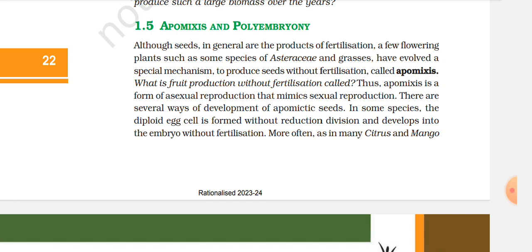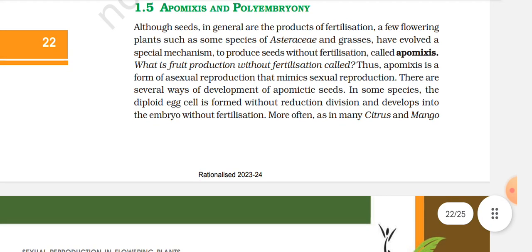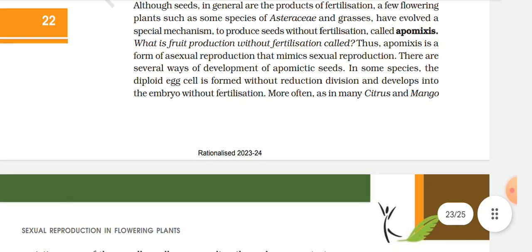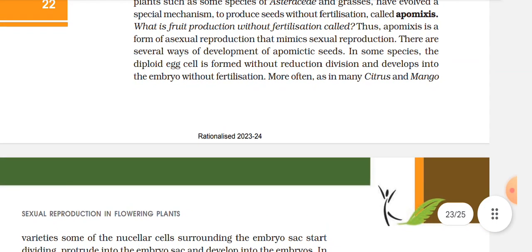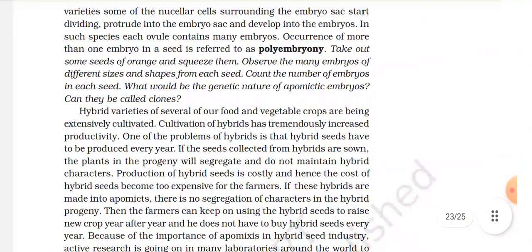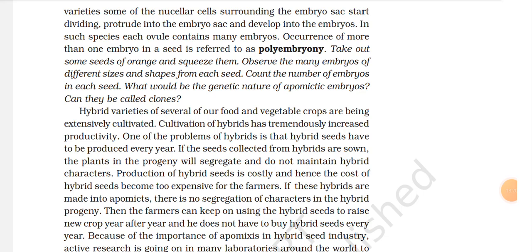Apomixis is a form of asexual reproduction that mimics sexual reproduction. There are several ways in which apomixis develops. In some species, the diploid egg cell is formed without reduction division and develops into the embryo without fertilization. More often, as in many citrus and mango varieties, some of the nucellar cells surrounding the embryo sac start dividing, protrude into the embryo sac, and develop into embryos. In such species, each seed contains many embryos — the occurrence of more than one embryo in a seed is referred to as polyembryony.